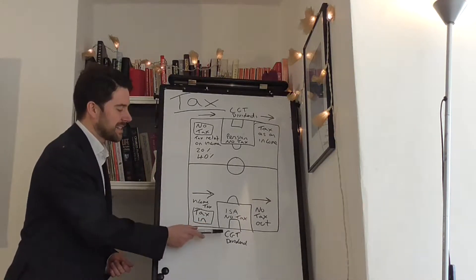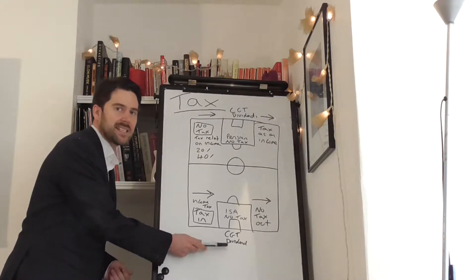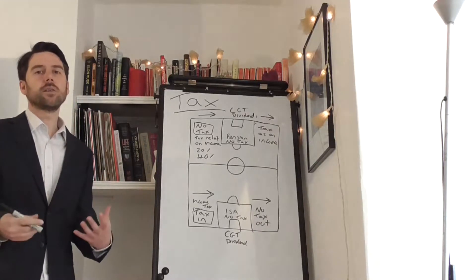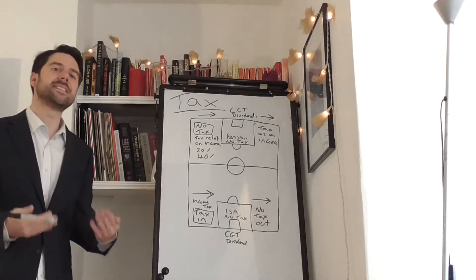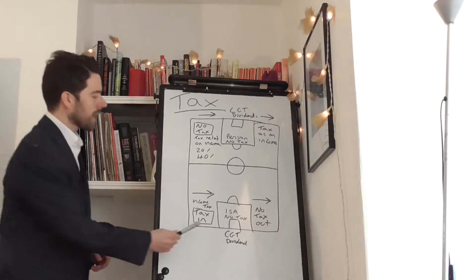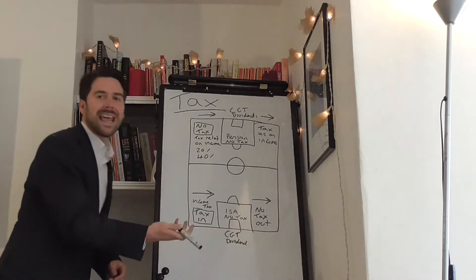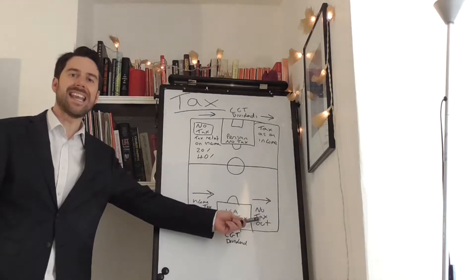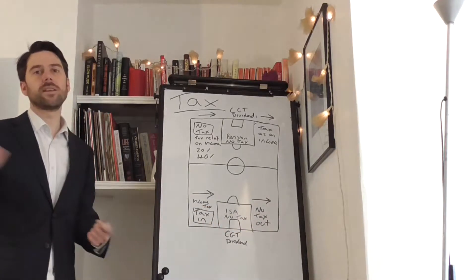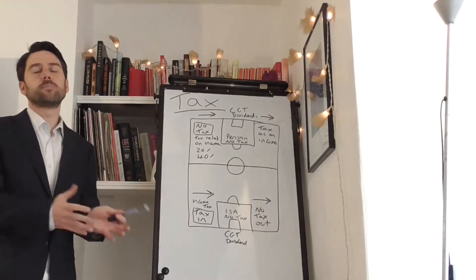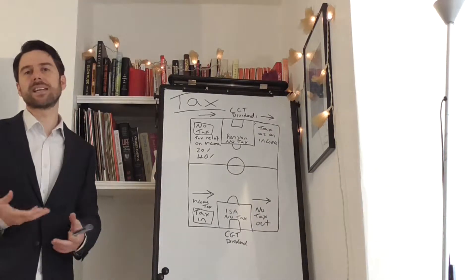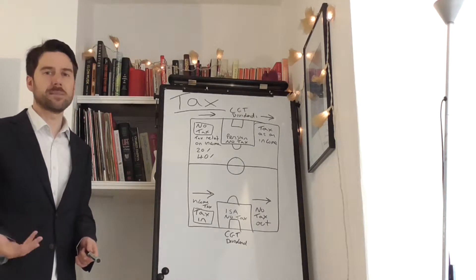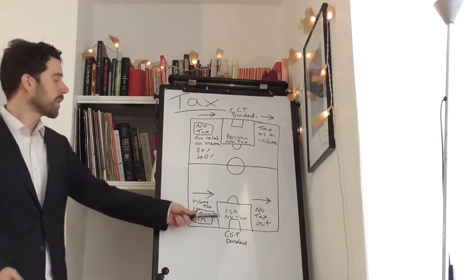When it's inside this box, it doesn't have capital gains tax or dividend tax, which means it can grow faster. Over time it's not getting taxed, your investments aren't getting eaten away by tax. When you take that money out of that tax wrapper, that ISA, it doesn't incur any tax. That's a great thing for when you retire and you've built up 20 years of tax investment savings in your ISA. You're not going to get penalized by any more tax.